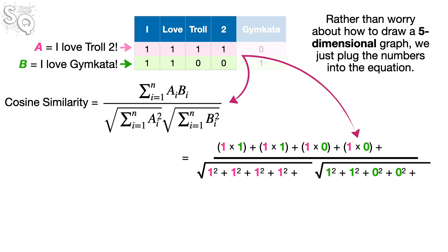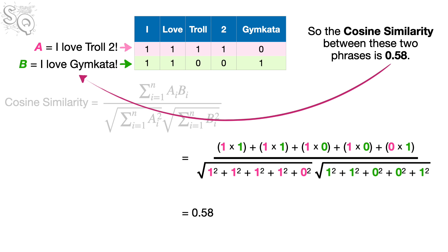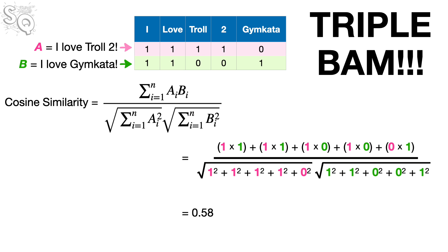Rather than worry about how to draw a five-dimensional graph, we just plug the numbers into the equation. Then we do the math, and we get 0.58. So the cosine similarity between these two phrases is 0.58. Triple bam!